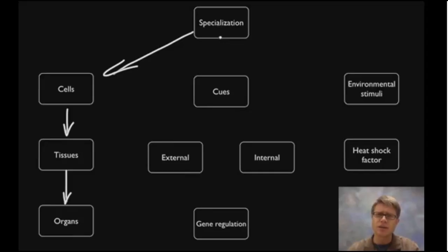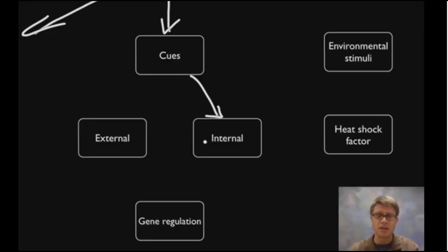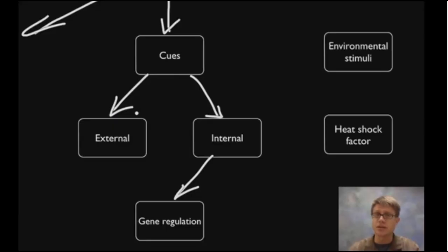How a cell decides what cell it's going to become is based on cues or signals that it's getting. Some of those signals come internally from the cell itself, and a lot of the time that's based on where the cell is. That's going to turn genes on or off and determine what cell it's going to become. But there are also external signals — chemicals coming from adjacent cells that are also turning on those genes and determining what cell it's going to become.